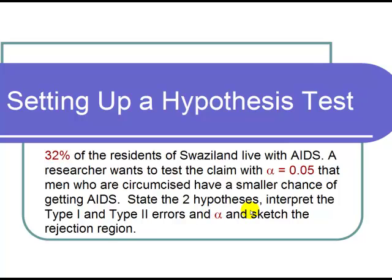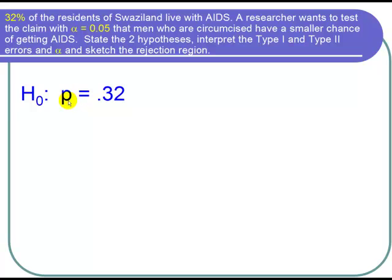We need to state the two hypotheses. We want to find out whether or not those who are circumcised have a smaller chance of getting AIDS. Notice either you get AIDS or you don't — we're talking about a proportion. Our null hypothesis, written as H₀, is that P equals 0.32, because 32% of the residents in Swaziland live with AIDS.